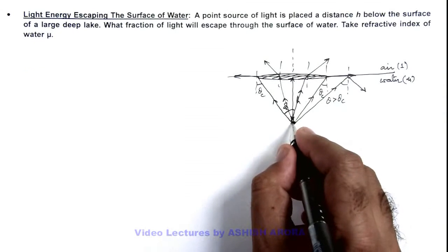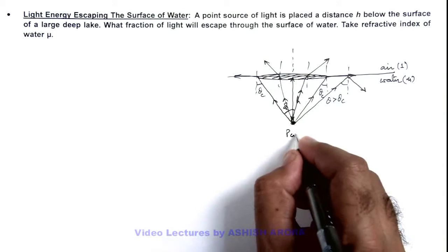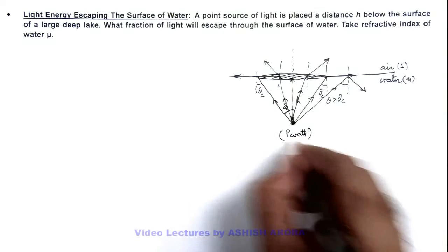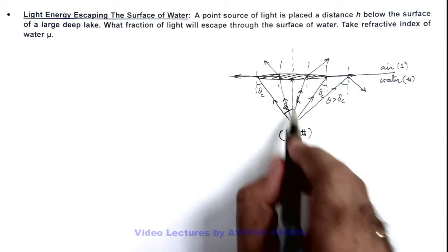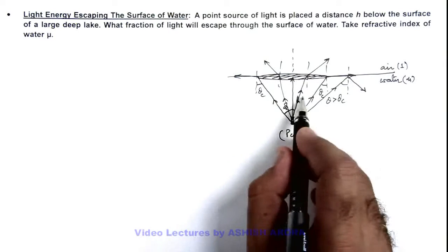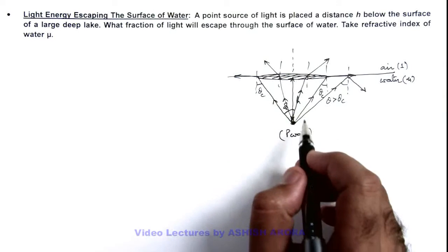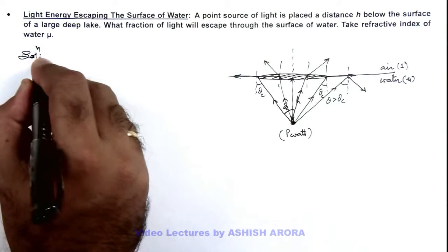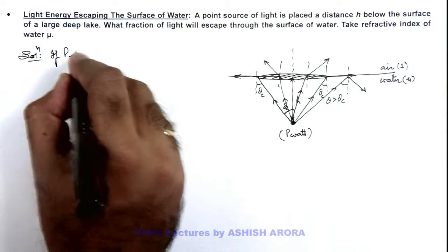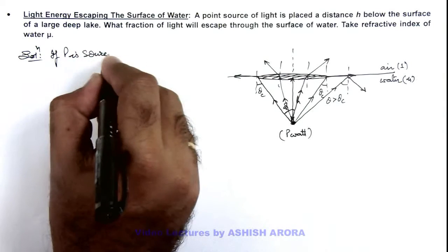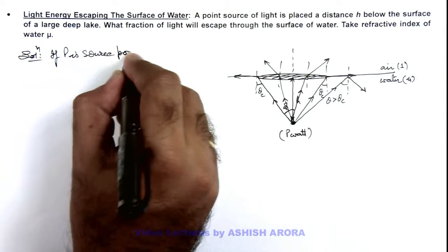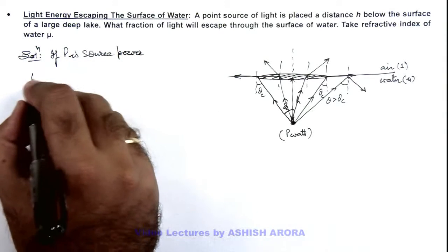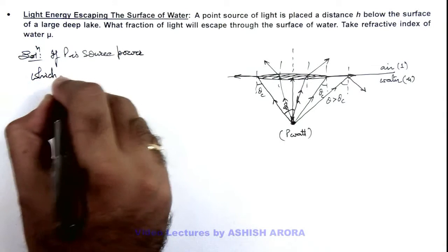If we consider this source is of power P watt, we can calculate the amount of power, the light energy which is there within this cone of half angle theta c. So here we can write in solution that if P is source power which is considered to be isotropic,